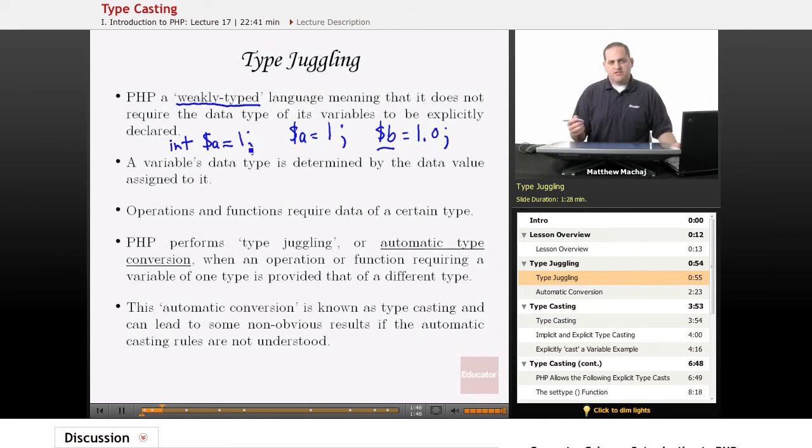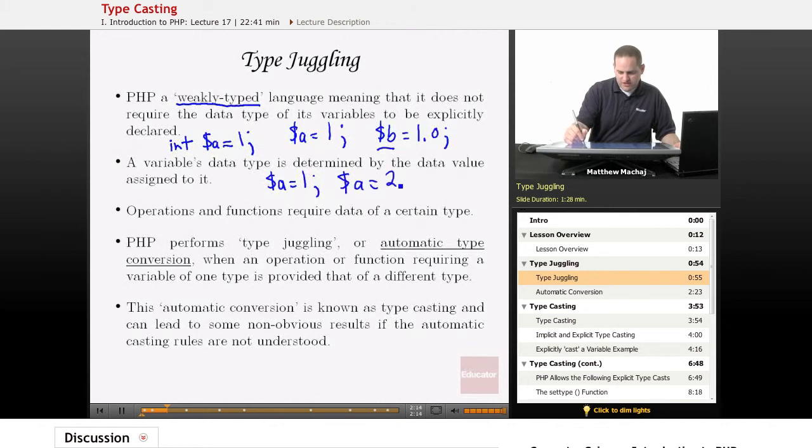Now, the thing about PHP is, because it's weakly typed, a variable can also change data types, whereas in other languages you might only be able to assign integers to a variable that's declared an integer. In PHP, if we have $a = 1, in the next line of code, this statement will say A is an integer that's equal to the value 1. We can, in the very next line, say $a = 2.5, and we've just implicitly changed the data type of the variable A. PHP now knows that A is a float data type, and it does that on its own.